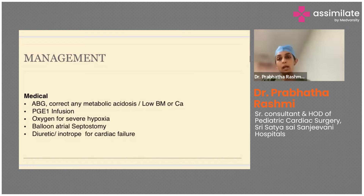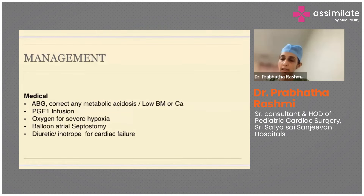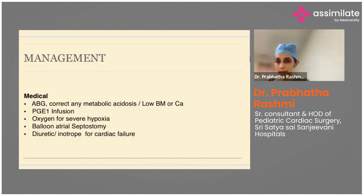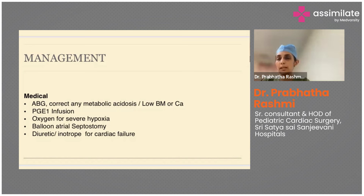If you have a setup to perform the switch as soon as the baby arrives, that's ideal. But sometimes babies come in a very deteriorated state — with acidosis of minus 18 to 20, pH of 7.28 to 7.29. In such cases, it is good to do a balloon atrial septostomy: you open the interatrial septum so that mixing happens, stabilizing the baby before putting him on cardiopulmonary bypass.